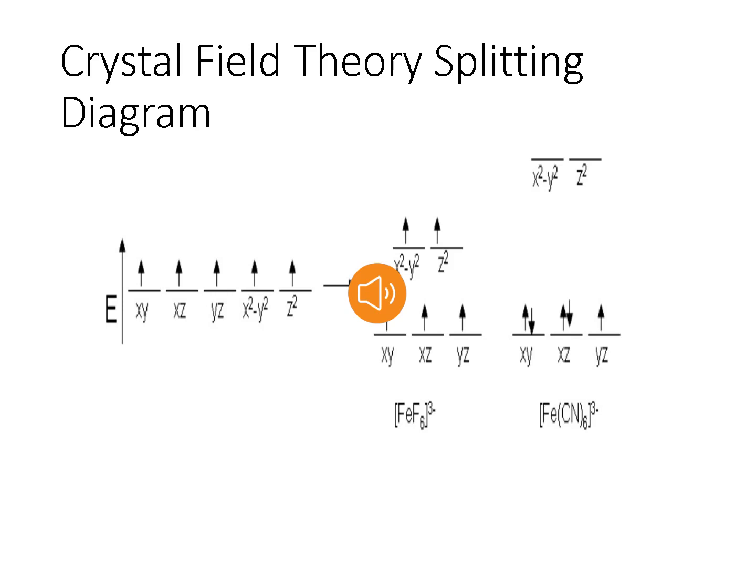Complexes such as hexafluoroferrate, in which the electrons are unpaired because the crystal field splitting is not large enough to cause them to pair, are called high spin complexes, because the number of unpaired electrons is maximized. But in the case of hexacyanoferrate, the strong field of six cyanide ligands produces a large splitting. Under these conditions, the electrons require less energy to pair than to be excited to the Eg orbitals. The five 3d electrons of the ferric ion pair in the T2g orbitals. Complexes in which electrons pair due to large crystal field splitting are called low spin complexes, because the number of unpaired electrons is minimized.